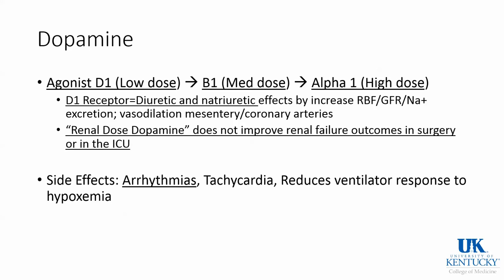Dopamine is an interesting drug because of its various receptors depending on the dose. You start out with dopamine and increase the dose to get beta-1 effects, and later on you get alpha-1 effects. There is a diuretic and natriuretic effect with dopamine; however, it does not improve renal failure outcomes in surgery or in the ICU. Renal dose dopamine was once used in the ICU but is no longer used specifically to improve renal function after surgery. Side effects to note are arrhythmias, especially atrial fibrillation.